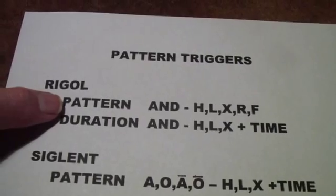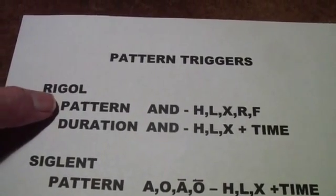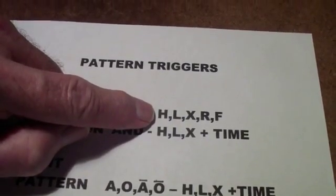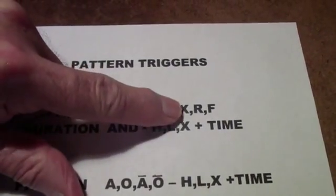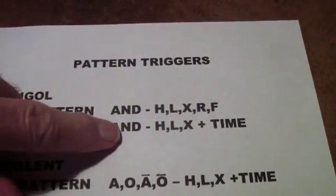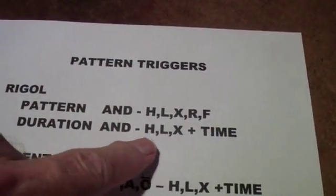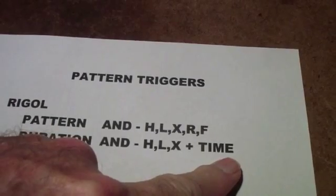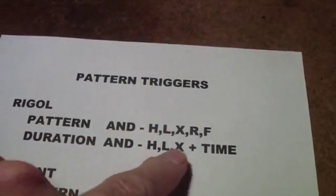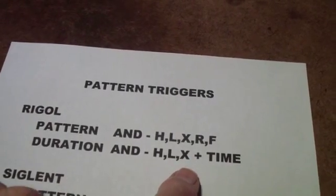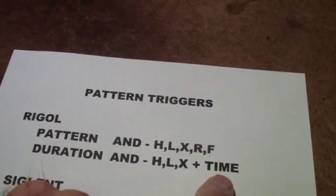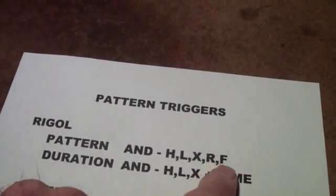Here is a summary of the pattern and duration triggers in the Rigol. In both cases, they are the AND of either a high level, a low level, or a don't care. In the pattern trigger, that includes a rising or falling edge, whereas in the duration trigger, it's the AND of a high, low, or don't care, and a time — that is a duration. So they're essentially the same. The duration trigger is exactly the same as the pattern trigger, but with the addition of time and the deletion of rising and falling edges.